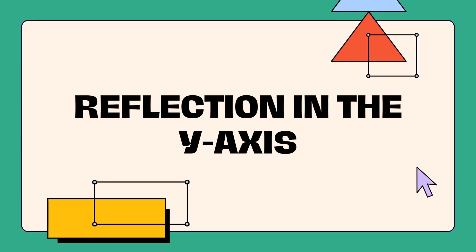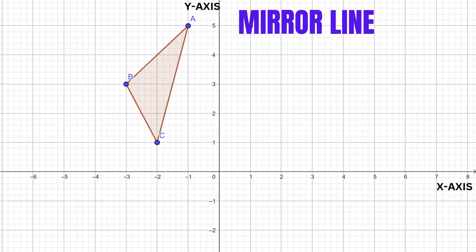Let's go through the steps using this triangle as an example. When you are reflecting a shape, you don't need to reflect the whole shape at once. Instead, reflect each vertex of the shape. Make sure that each vertex is the same distance away from the mirror line as the original shape.